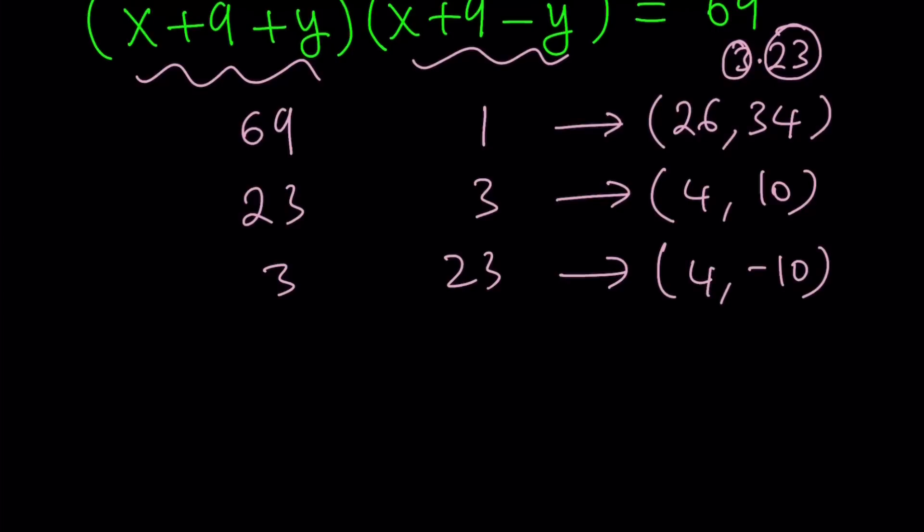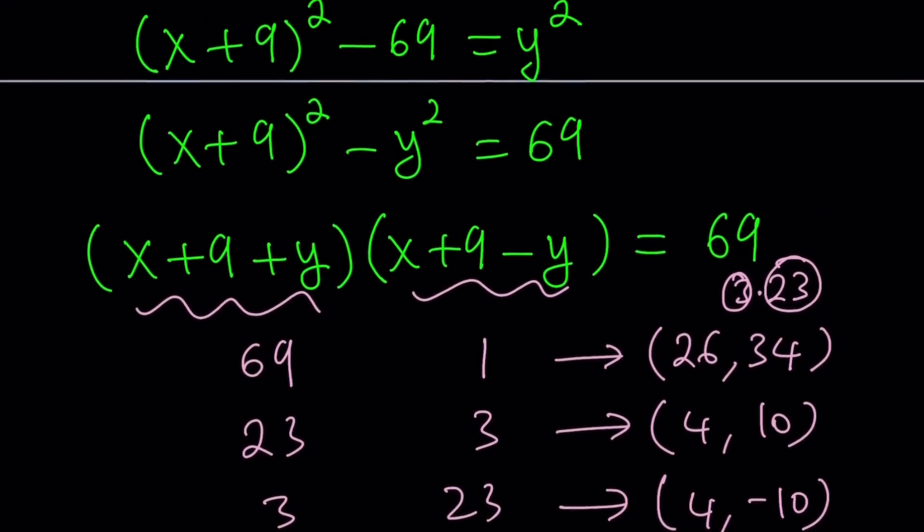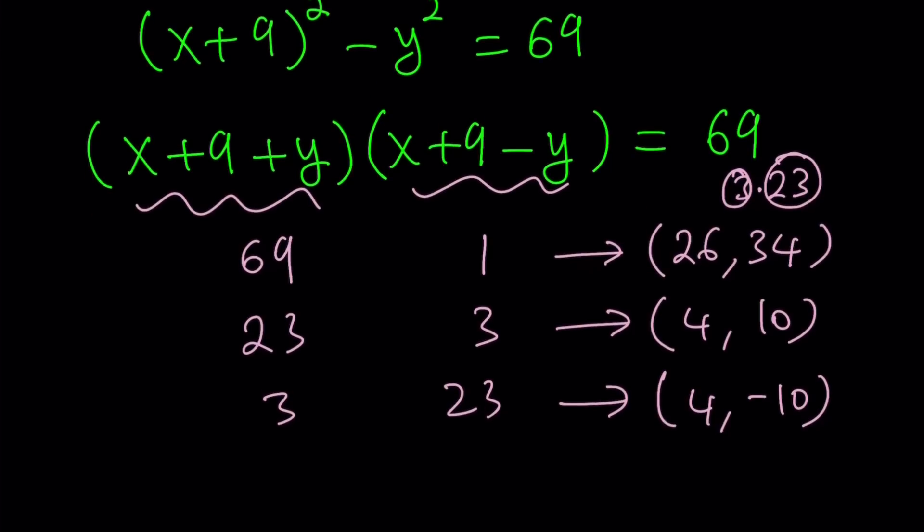And something interesting happens when you switch this. Let me tell you what is going on. Since y is squared, if y = y₀ is a solution, negative y₀ is also a solution. Because when it's squared, it's going to give you the same result. So y is going to come with two signs plus minus. Make sense? But x values are going to be pretty much fixed.